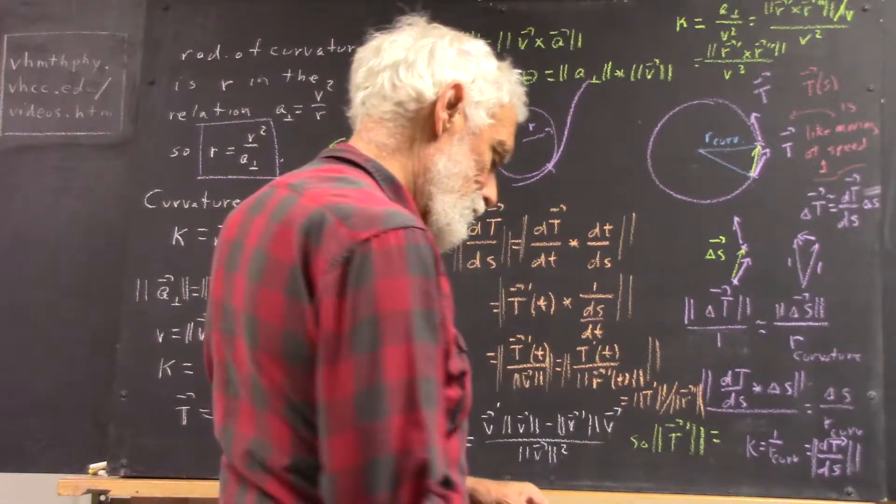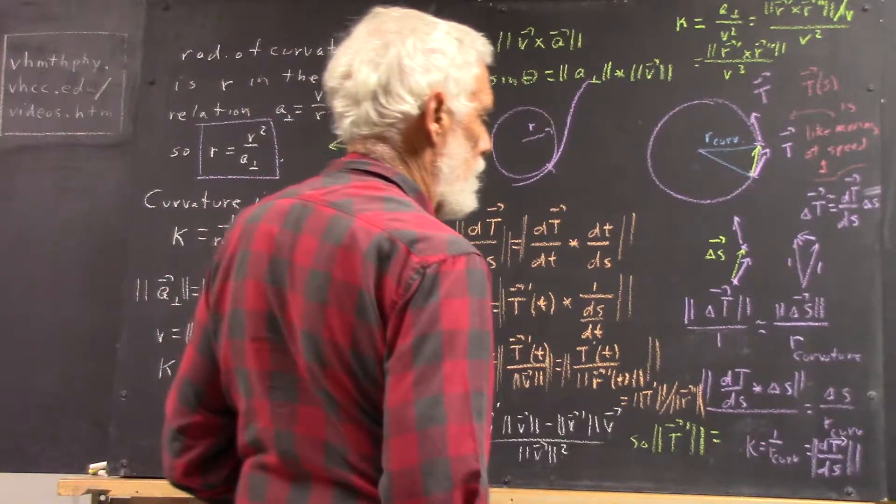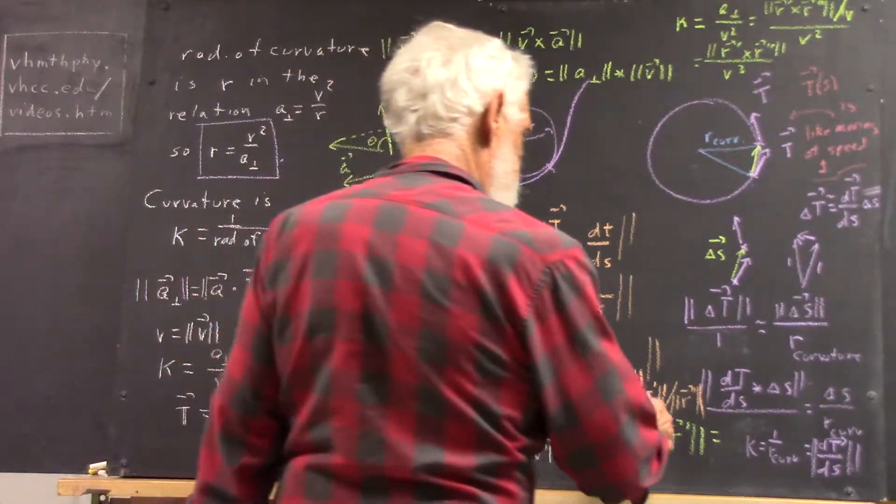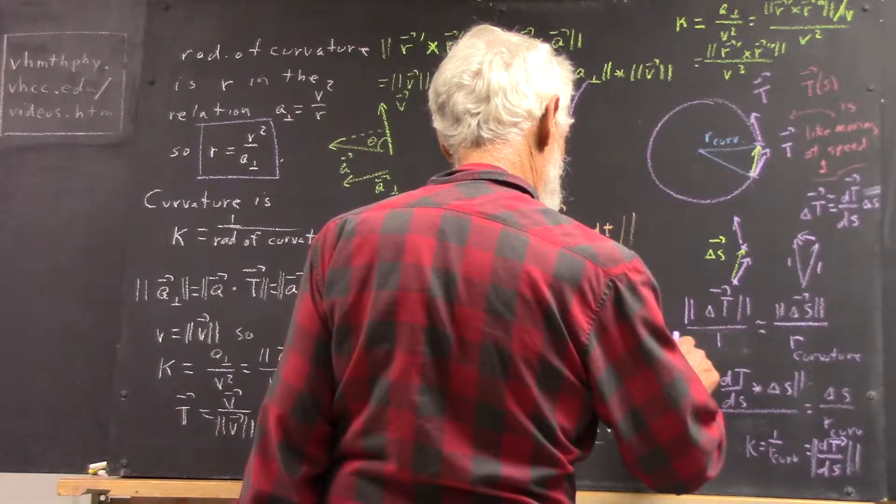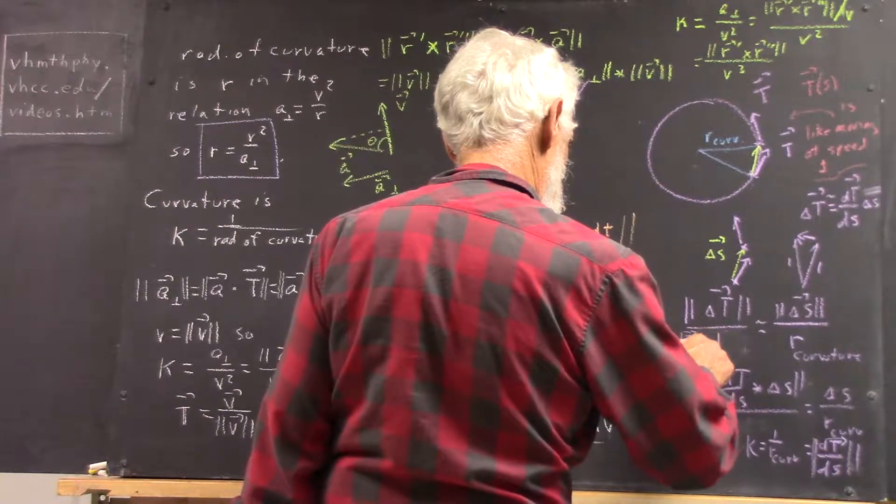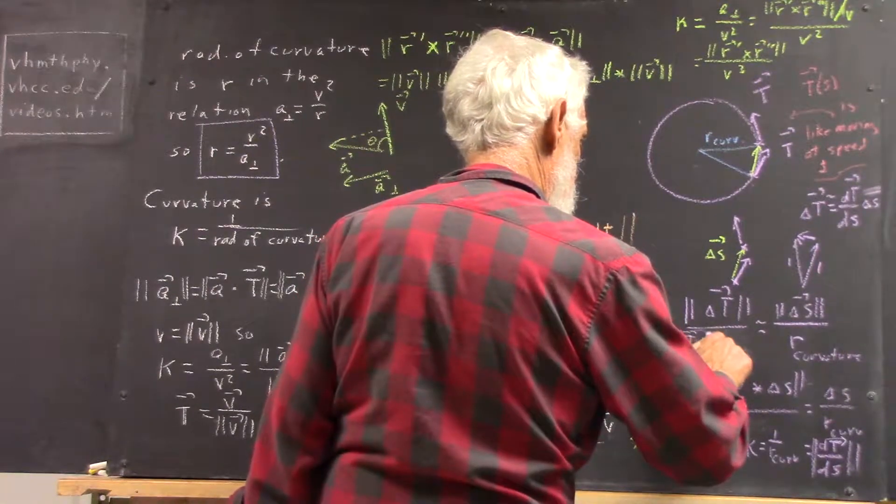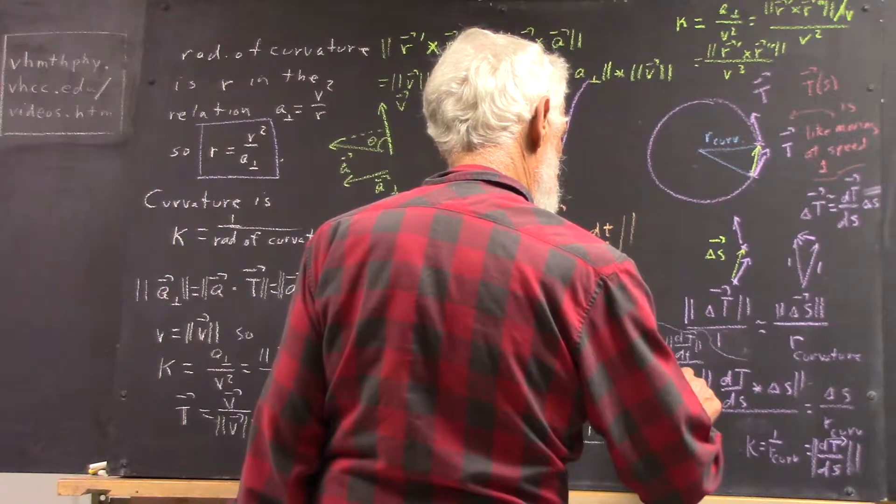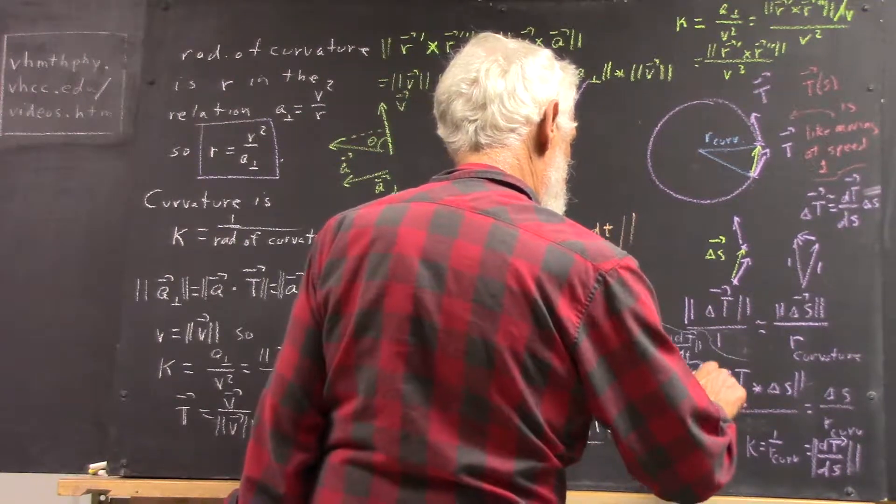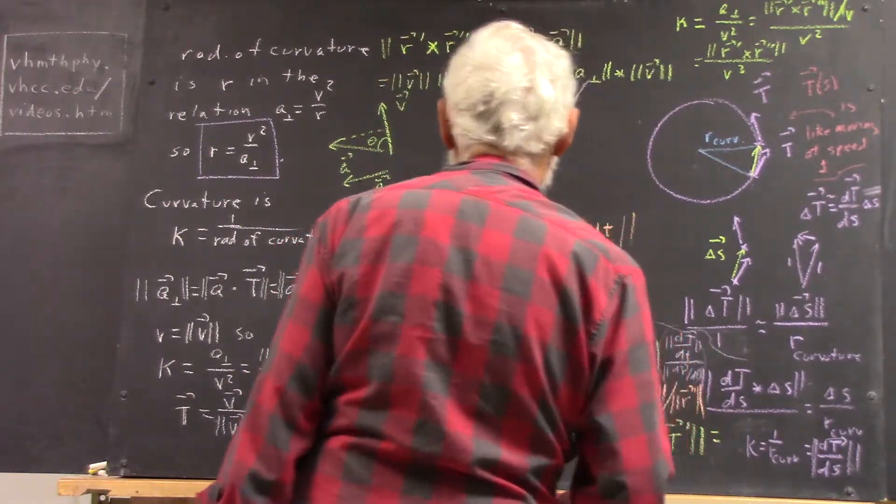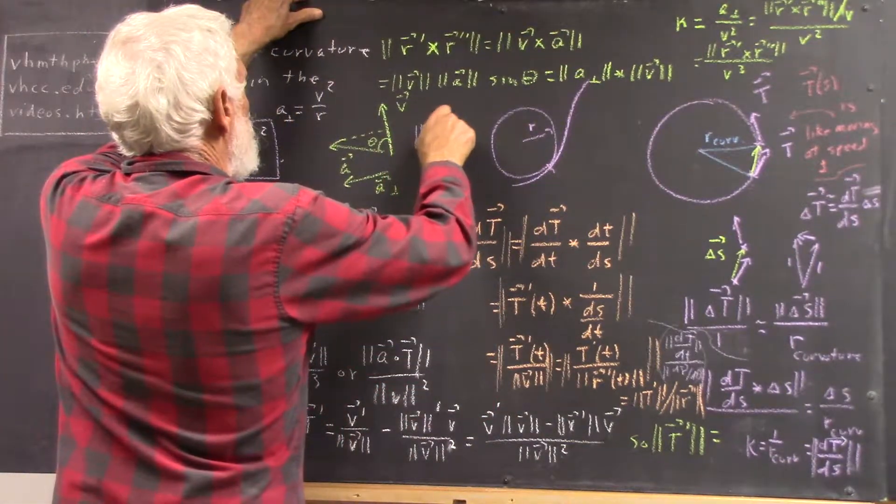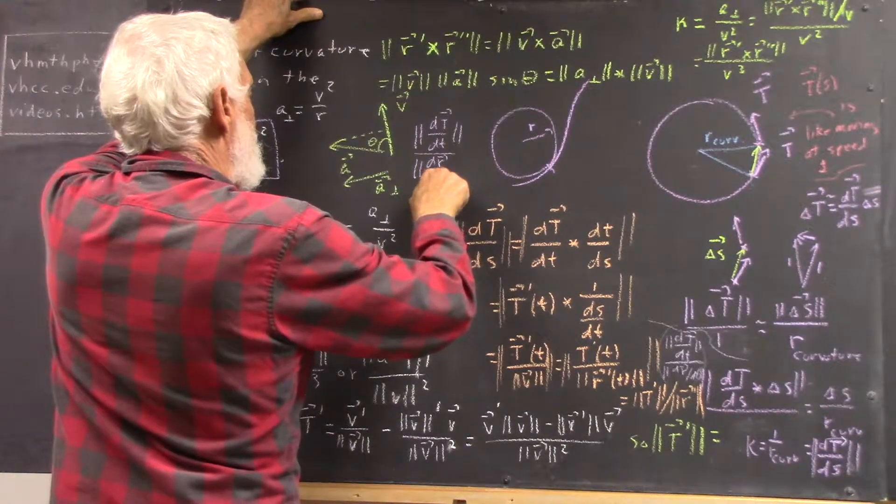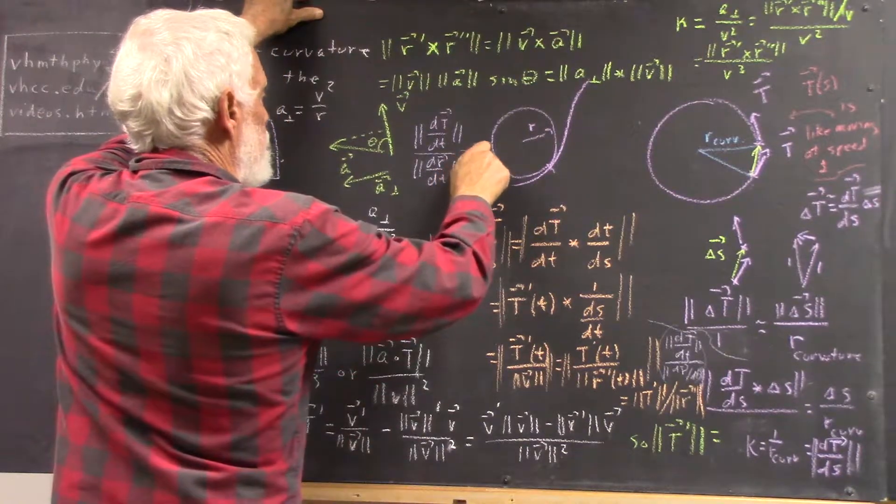So that's not written as clearly as it might be. Because t prime could be dt/ds, or dt/dt. So let me rewrite this as, I hope that's legible. I've got that too bunched up. I'm going to write it up here. Okay? And that's going to be curvature.